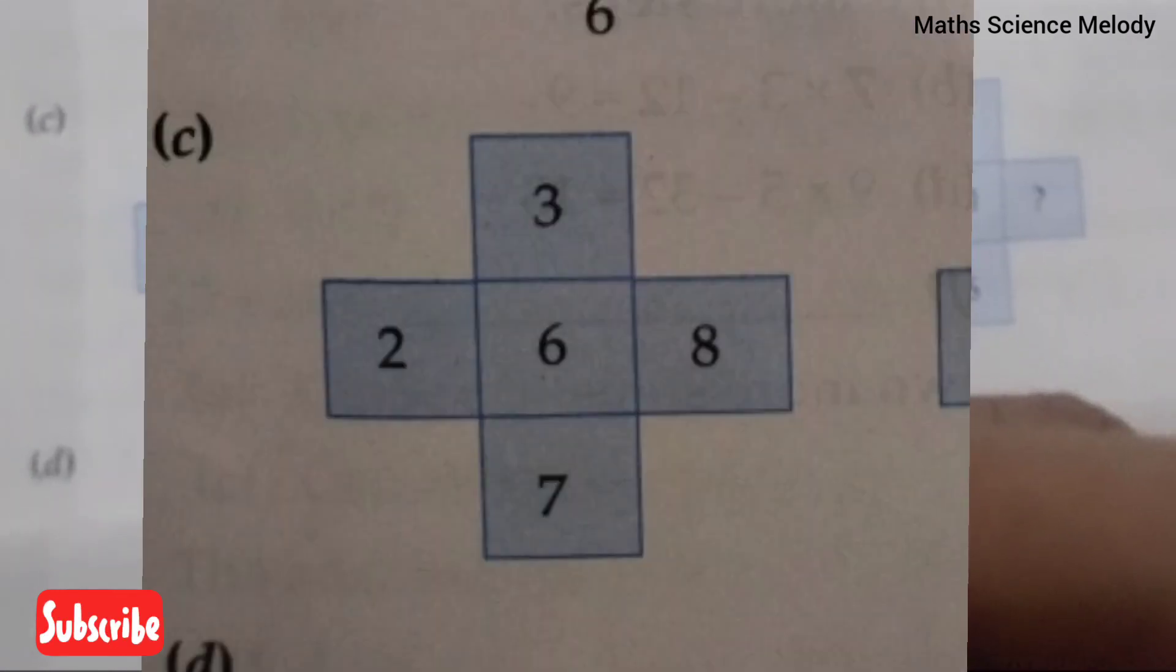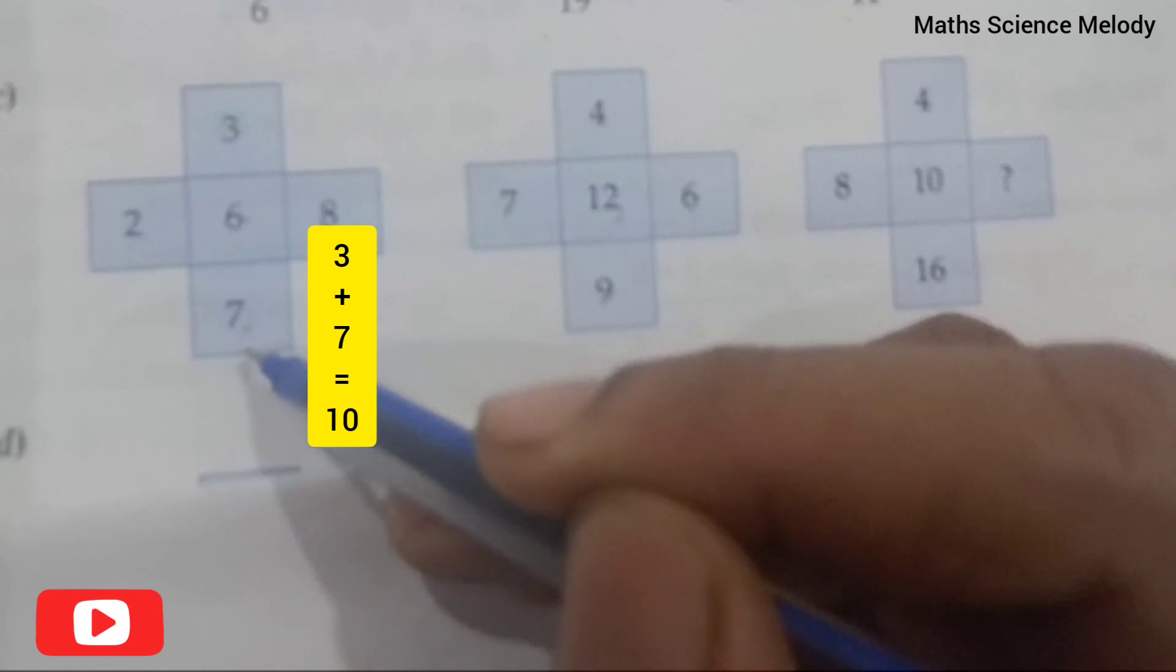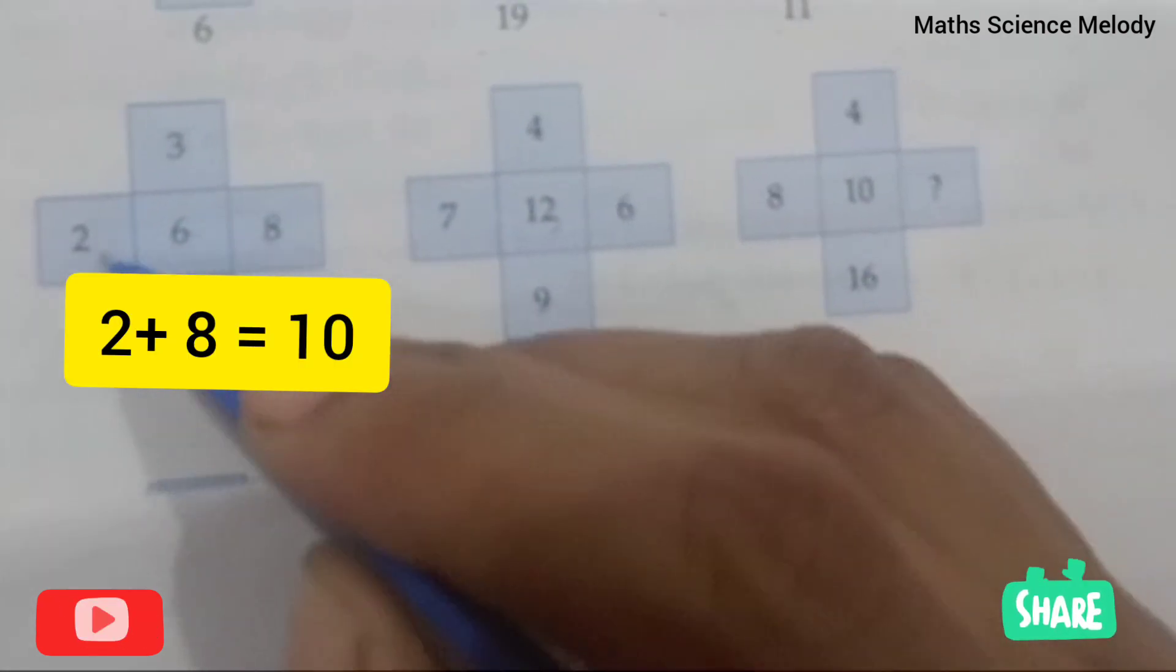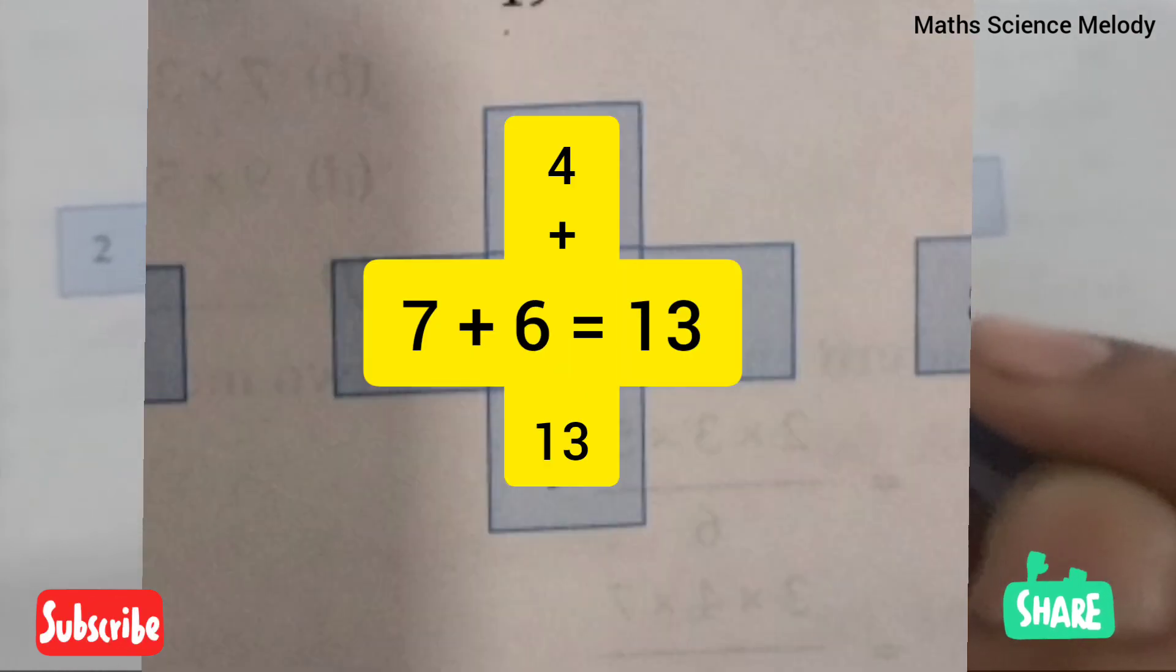Three plus seven equals ten, two plus eight equals ten. Here also four plus nine equals thirteen, seven plus six equals thirteen. So four plus sixteen equals twenty, so what number will you add with eight to get twenty?